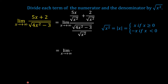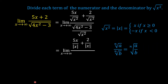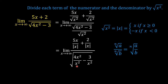So we can replace the square root of x squared with the absolute value of x. This is now equal to the limit of 5x over the absolute value of x plus 2 over the absolute value of x. For the denominator, we can apply the property of radicals: the nth root of a divided by the nth root of b is equal to the nth root of a over b. So we can write this using only one radical symbol, giving us the square root of 4x squared over x squared minus 3 over x squared.